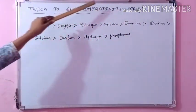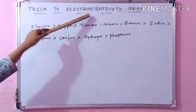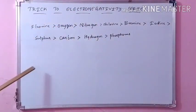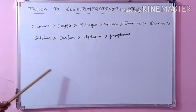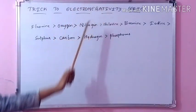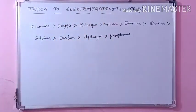Electronegativity is nothing but it is the ability of an atom or an element to attract the shared pair of electrons towards itself. This is called electronegativity.